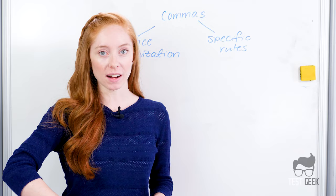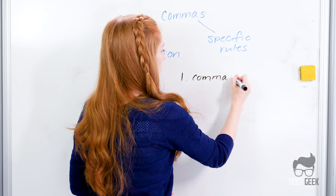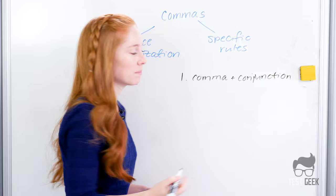Now let's take a look at specific rule commas. We have three specific rules that we need to follow for commas. The first one is something we've already talked about, and this is when we have a comma